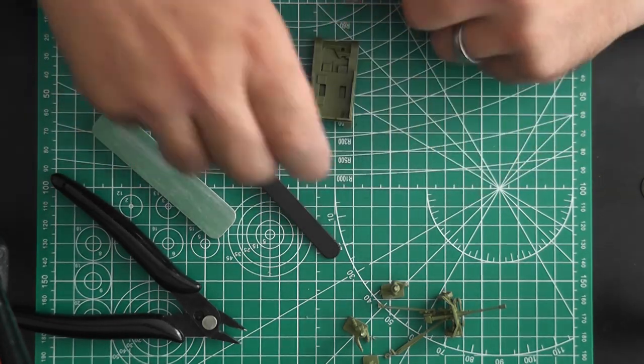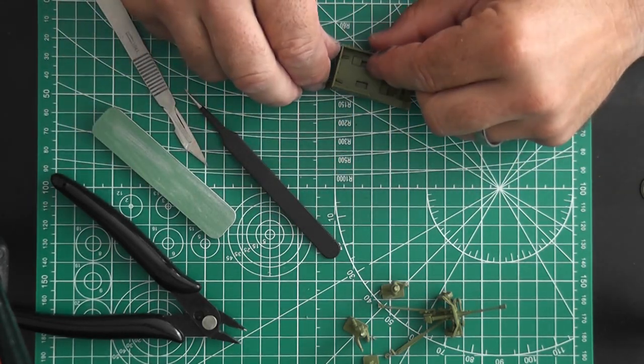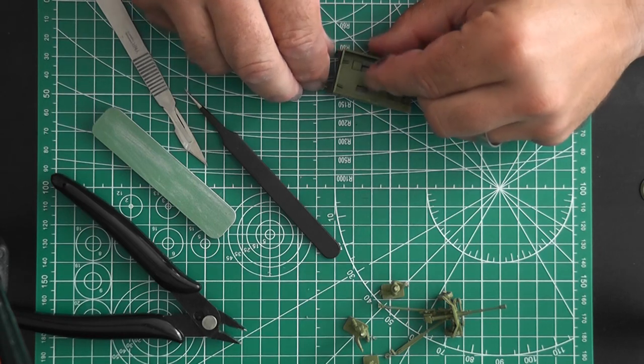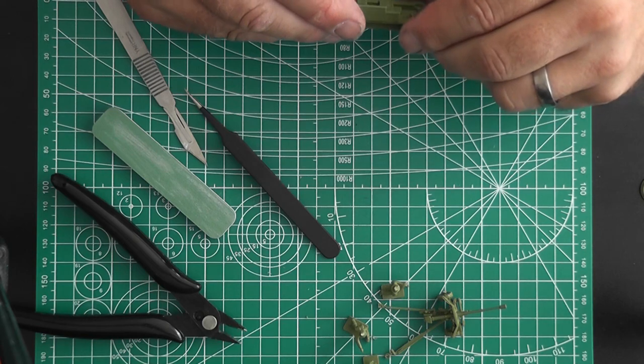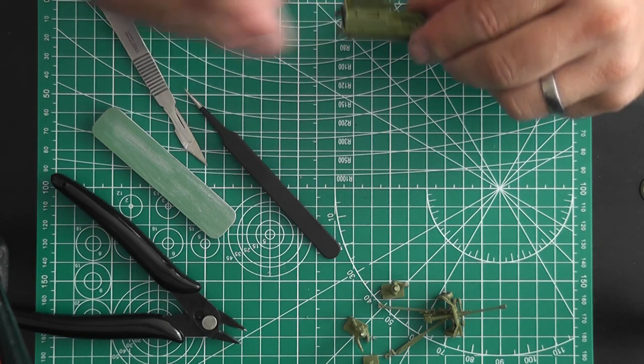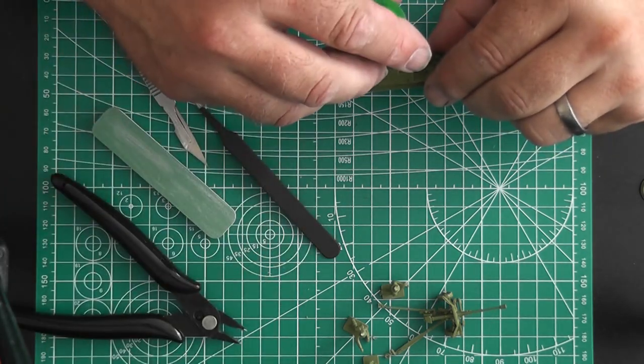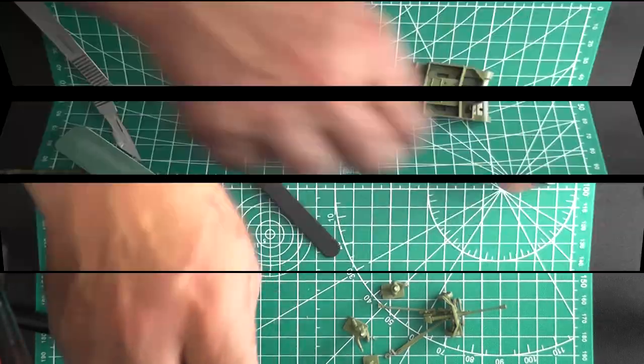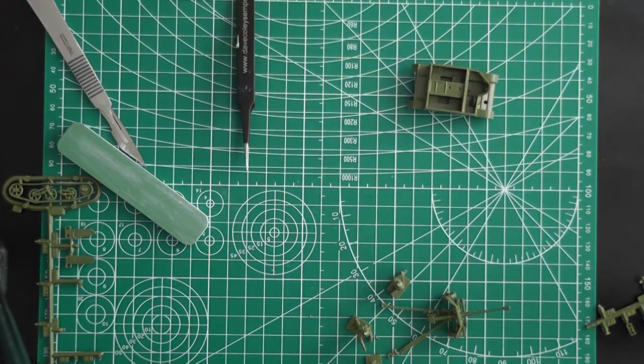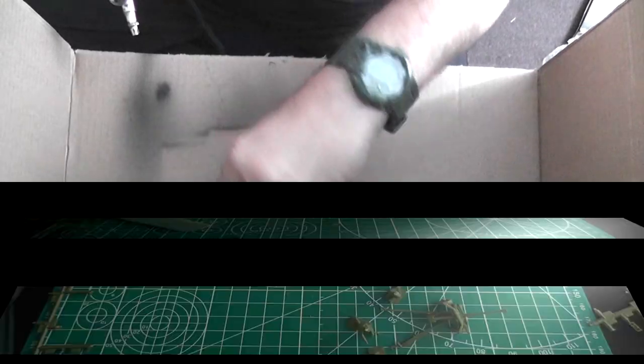I'm quite a fan of the Bren gun carrier. I did, I have actually done like a 1:35 scale one, which I might pick up again. I'll tell you why in a minute. But yeah, so there's the sides go on. That's Tamiya's extra thin glue I'm using. Brilliant stuff. Absolutely love it.